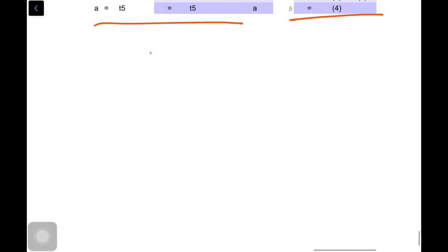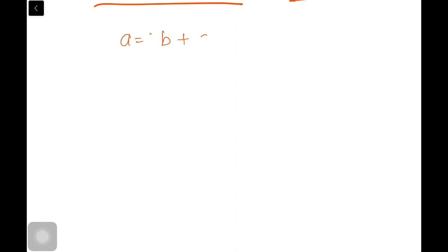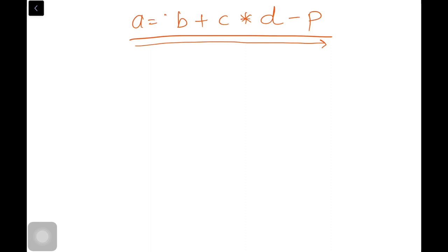The implementation: suppose we are considering an example where a is equal to b plus c into d minus p. So this is the example. So how are we going to start? Whenever you are taking an input from a user, you should scan the input and execute the highest priority operator first. So what will I do?